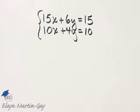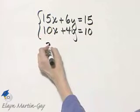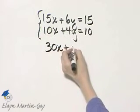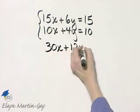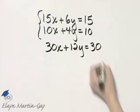Make sure you write that down. Top equation by 2: 15x times 2 is 30x, and then plus 6y times 2, that's 12y, 15 times 2 is equal to 30.